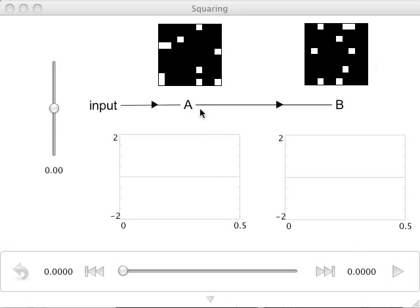The network shown here computes the square of a variable represented in A and puts the value into B. Although the network structure is very similar to that for a communication channel, we have instructed NINGO to compute connection weights between A and B such that the value represented in B is the square of A, instead of simply re-representing the value in A as in the communication channel.